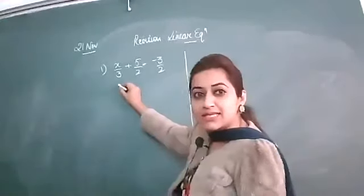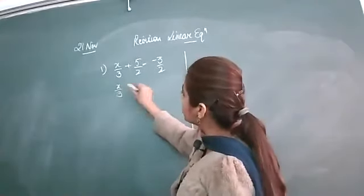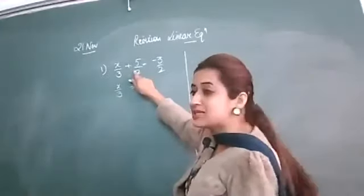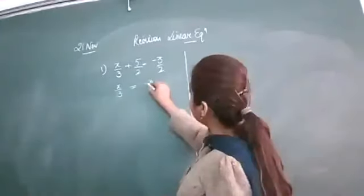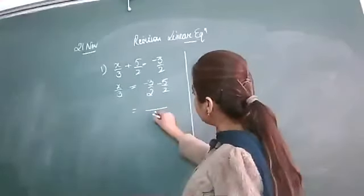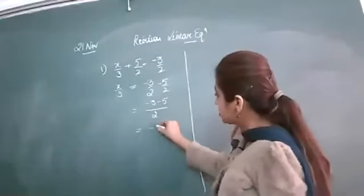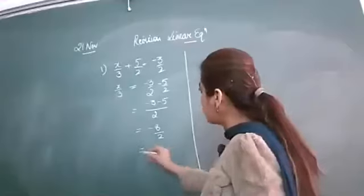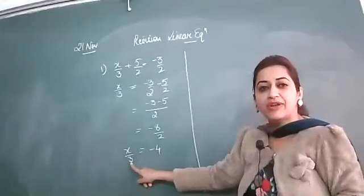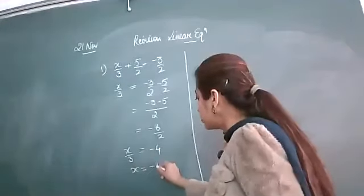Separate the terms containing x. Keep x/3 on the left side. The 5/2 with a plus sign shifts to the right hand side and becomes minus 5/2. Taking LCM, minus 3 minus 5 gives minus 8 over 2, which equals minus 4. Shifting the 3, x equals minus 12.